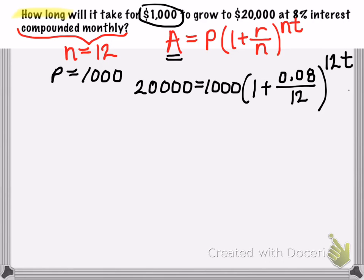So what we have right here is an exponential equation, because the variable here contains the exponent. So to solve this exponential equation, we first need to isolate the exponential quantity. So we need to divide both sides by 1,000 because the exponential quantity in this problem is the 1 plus 0.08 divided by 12 raised to the 12t.